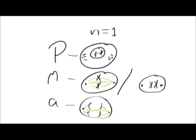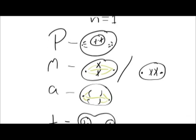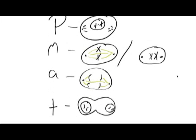In metaphase, after the nuclear membrane has dissolved, the spindle fibres align the chromosomes at the cellular equator. In anaphase, the spindle fibres contract, separating the chromatids which form the chromosomes into the cellular poles.